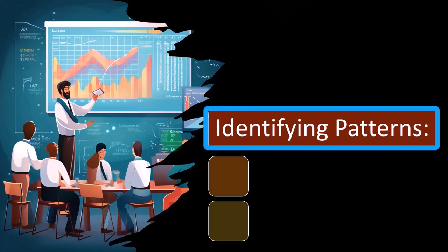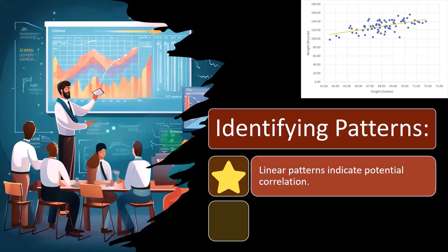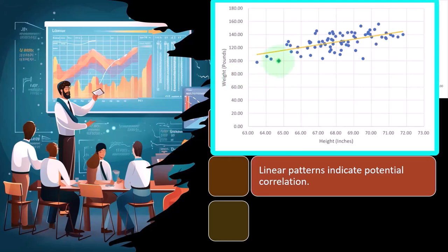Identifying patterns: linear patterns indicate potential correlation. So this one's the height and weight again. With height and weight, you would think pretty confidently you can make a hypothesis that there is going to be a cause and effect relationship. If someone is taller, they're going to have more mass, they're going to weigh more typically, everything else equal.